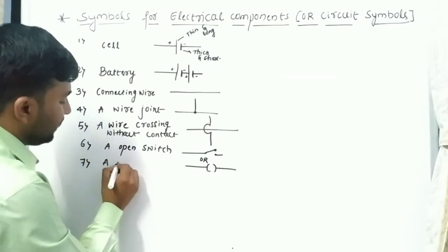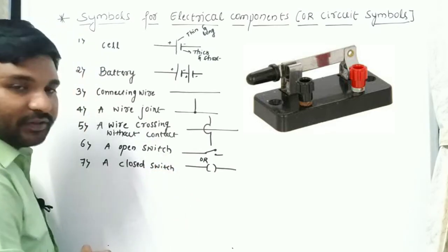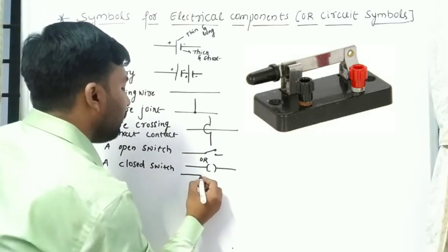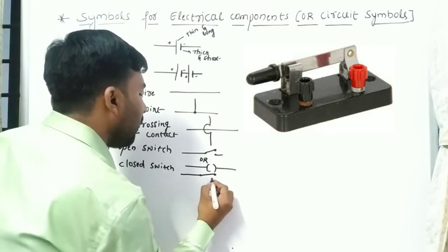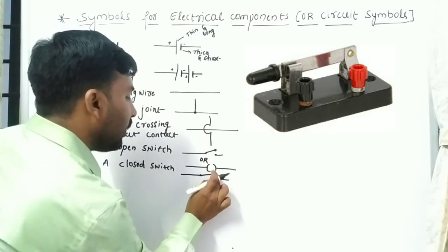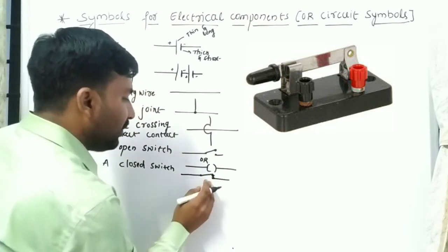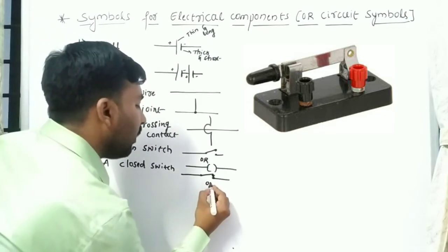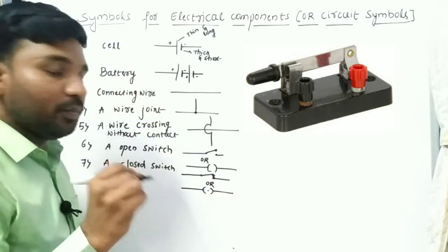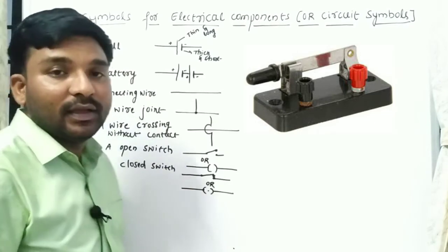Next is a closed switch. In the closed switch symbol the lever is fully joined down. We also have an alternative symbol where a dot is added to show the connection. These two symbols represent the closed switch.